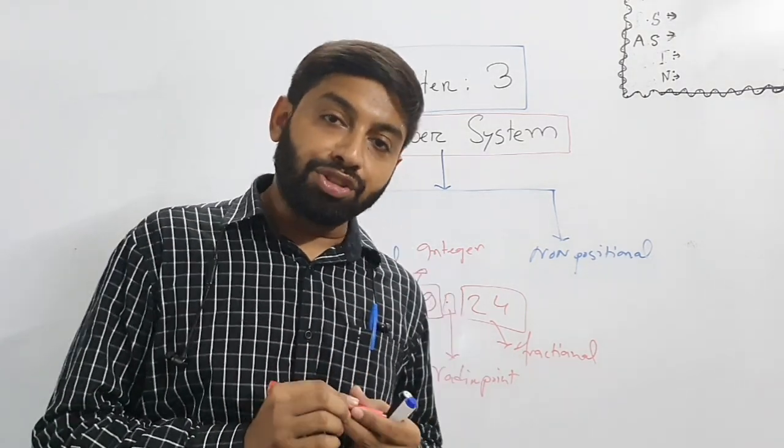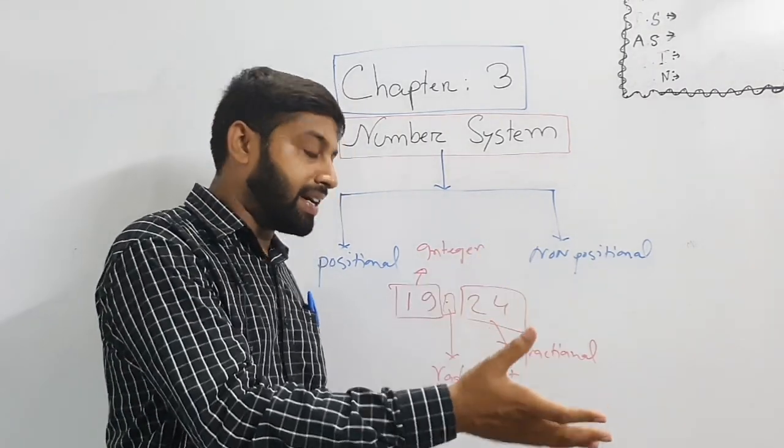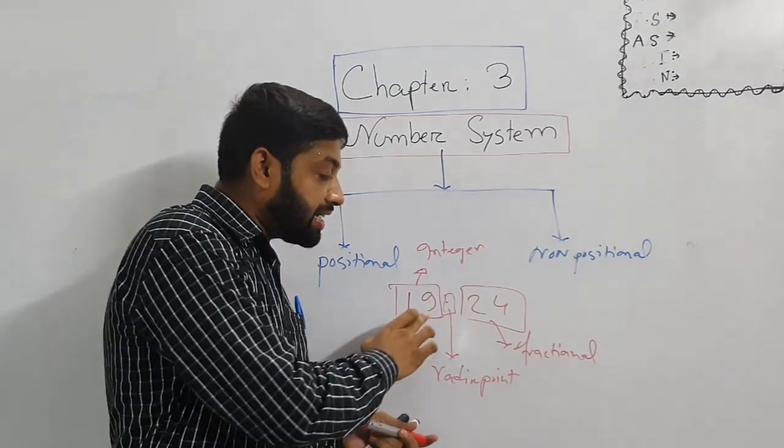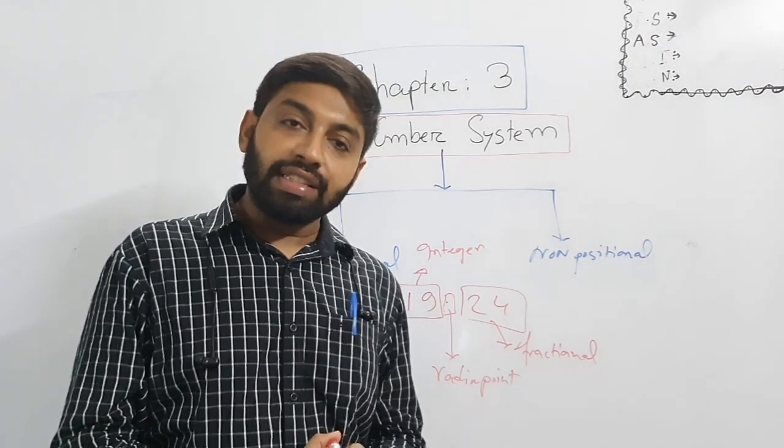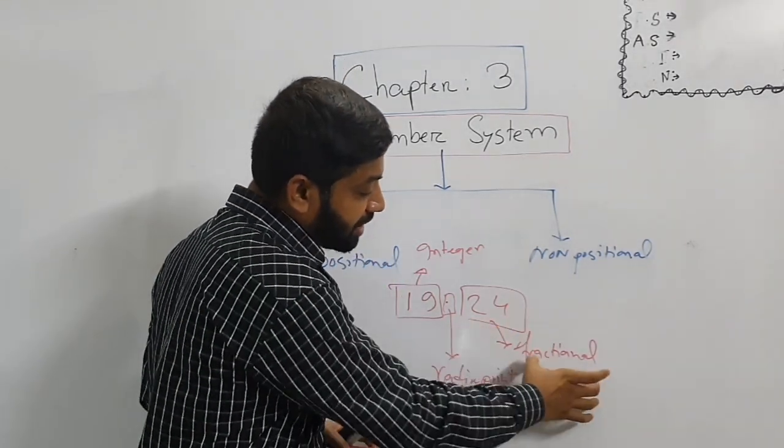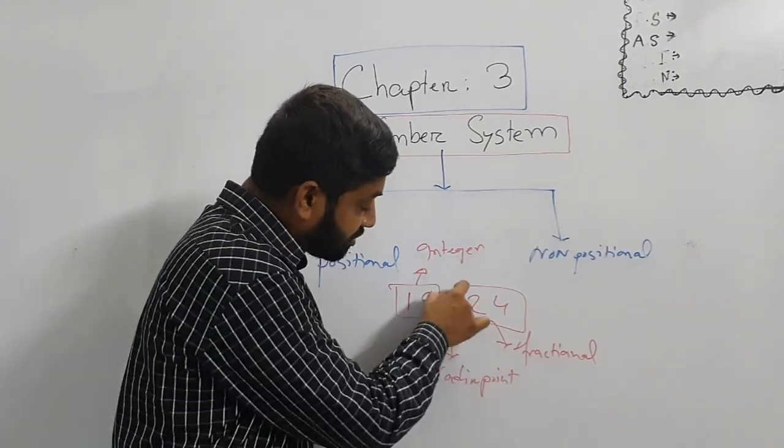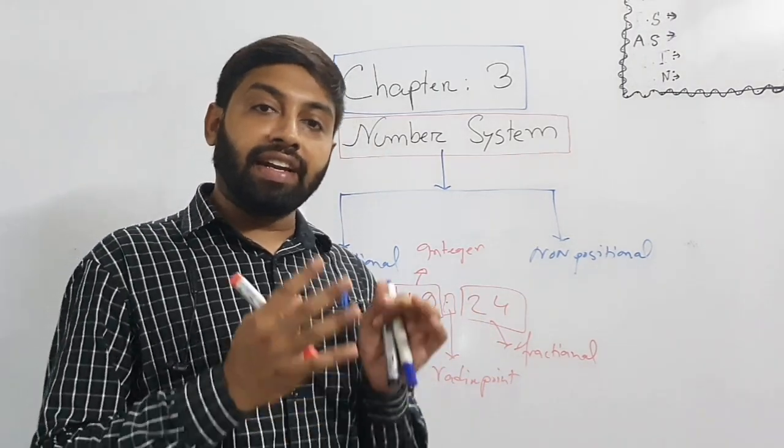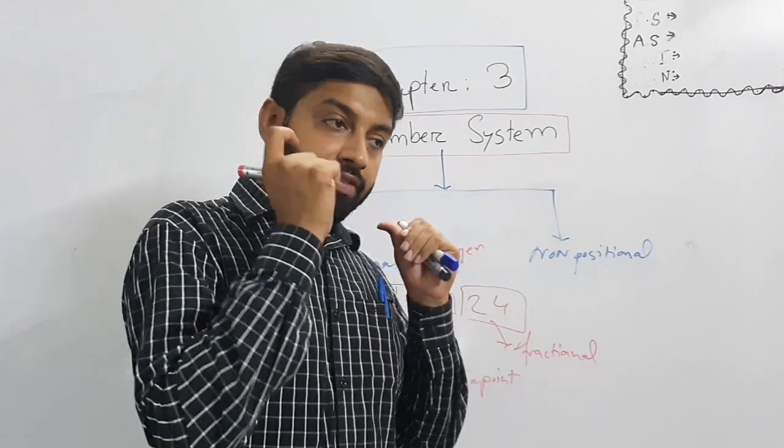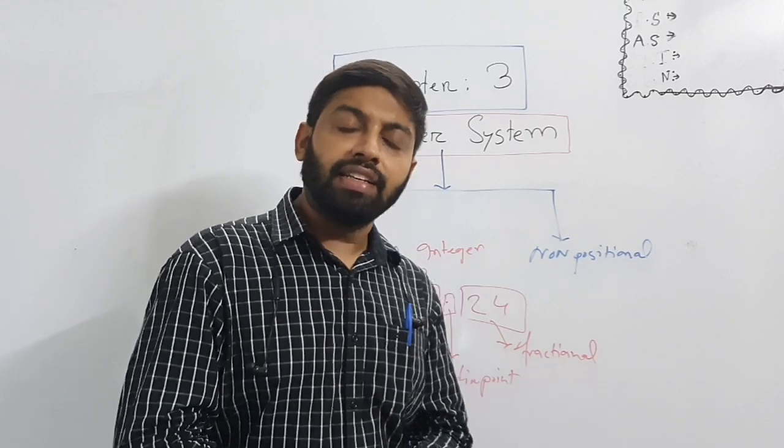This part represents the integer part. That is why we call it 19.24, not 19 point 24. This one is fractional part. At this point, we are going to call it radix point. This is a fractional point to define this portion is integer and last part is fractional.